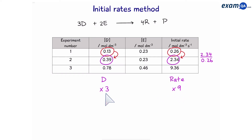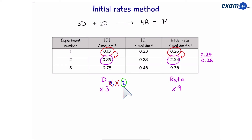D has tripled in concentration and the rate has times by 9. Is D zero order, first order, or second order? If it was zero order, the rate would not have changed — clearly the rate has changed, so it's definitely not zero order. If it was first order, the rate would have changed proportionally, meaning if D tripled, the rate should have tripled. Here the rate has times by 9, so it's not first order. Meaning it must be second order. We can do a quick calculation to prove: three to the power of two equals nine. So we know the order of D.